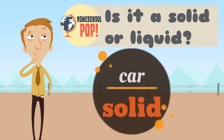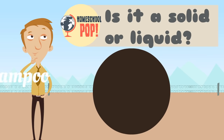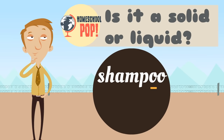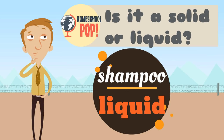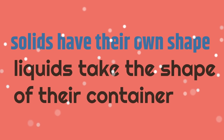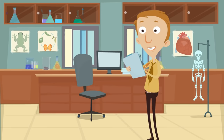Great job! How about shampoo? Is shampoo a solid or a liquid? Shampoo is a liquid — it takes the shape of its container. Solids have their own shape. Liquids take the shape of their container. That was pretty cool. You seem to know a lot about solids and liquids now. So the next time you're drinking something or holding something, you can say to yourself, I know what this is.